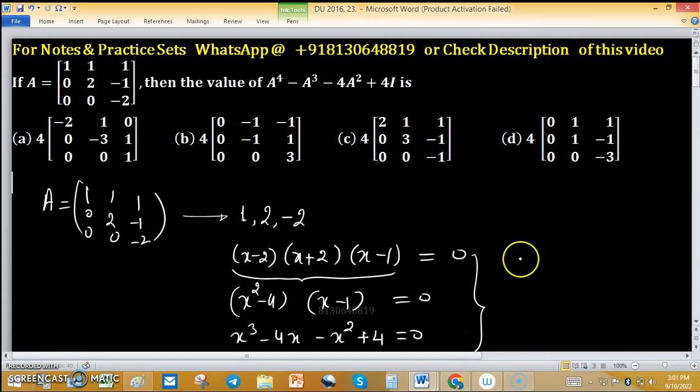Apply the Cayley-Hamilton theorem. According to Cayley-Hamilton theorem, every matrix satisfies its characteristic equation. So A³ - 4A - A² + 4I = 0.